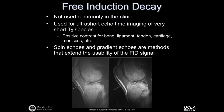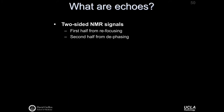Spin echoes and gradient echoes are methods that extend the usability of the FID. The FID decays because of reversible and irreversible processes, and we'll talk about two ways in which we can undo the reversible processes to recover what we call an echo signal. Echoes are two-sided NMR signals — the FID was a one-sided signal that only decayed. Echo signals are two-sided: the first half comes from refocusing some NMR event, a gradient or RF pulse that permits reversing some reversible signal losses, and the second half comes from continued decay, similar in ways to the FID.